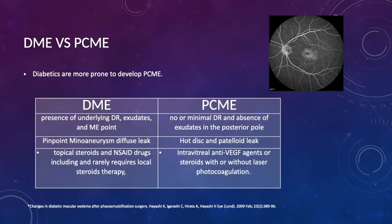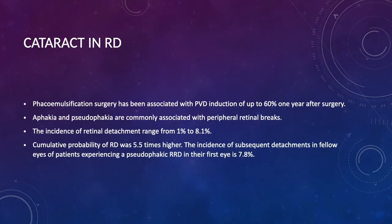There's also the special condition of pseudophakic cystoid macular edema, and it's important to note that these are two different entities. The major difference is in the presence of typical petaloid appearance on fluorescein angiography and the hot disc, and there's a difference in the management of both conditions. Regarding cataract and retinal detachment, with the advent of phacoemulsification, we still have a high number of posterior vitreous detachments, which is one of the risk factors for retinal detachment, reaching up to 60% after one year of cataract surgery. Studies have shown that the incidence of retinal detachment reaches up to 8%, and the cumulative probability of RD was 5 times higher in pseudophakic eyes.